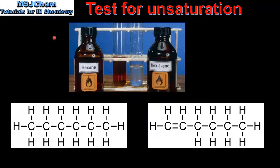Finally we look at an example. We have hexane on the left and hex-1-ene on the right, showing the full structural formulas of both. Hexane is a saturated molecule with carbon to carbon single bonds. Hex-1-ene is an unsaturated molecule with a carbon to carbon double bond between carbon number 1 and carbon number 2.